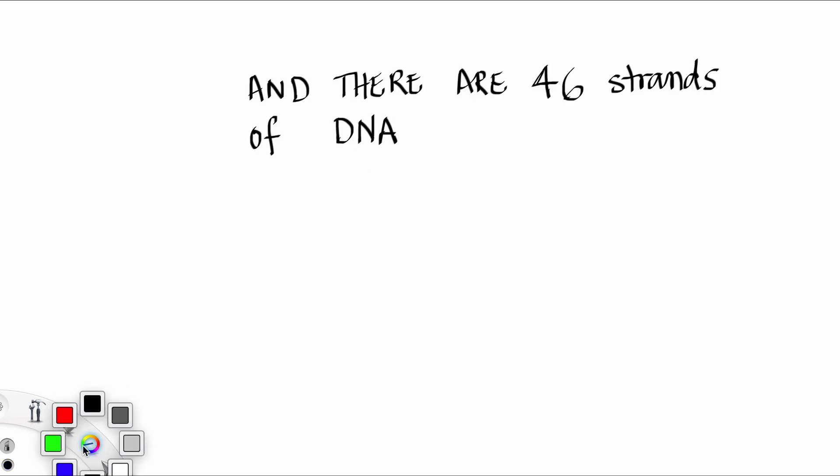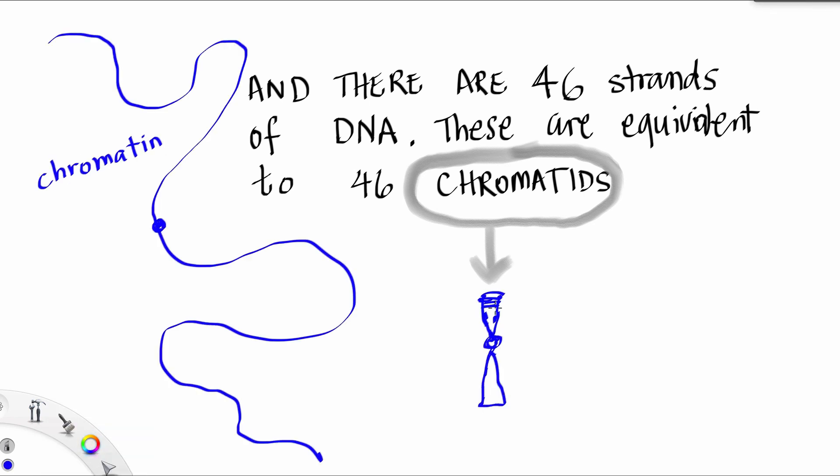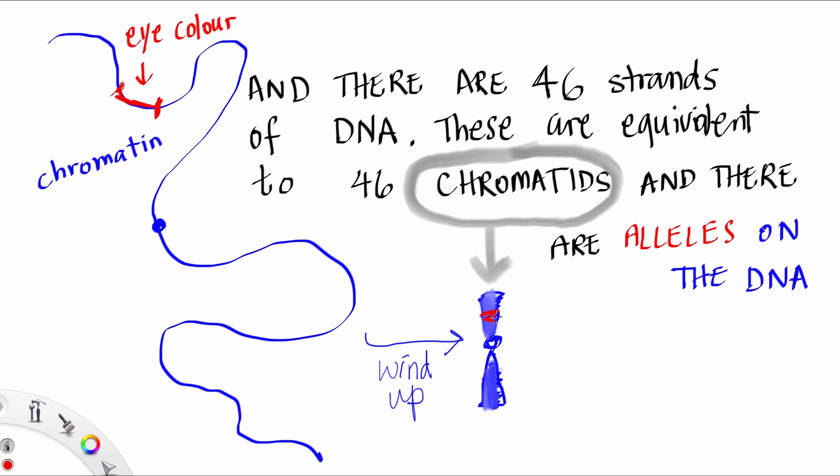There are 46 strands of DNA in a human and these are equivalent to 46 chromatids. If you take a piece of chromatin and wind it up, then it turns into a chromatid, and there can be alleles on this DNA such as eye color and hair color.